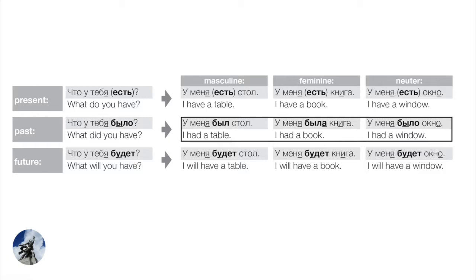In the past tense we must include the linking verb, and it agrees with the subject — it changes form. У меня был стол. У меня была книга. У меня было окно. The subjects are стол, книга, окно, so the verb changes: был, была, было. In the future tense we use будет — not marked for gender in singular: У меня будет стол. У меня будет книга. У меня будет окно.